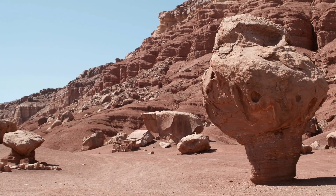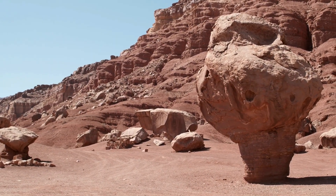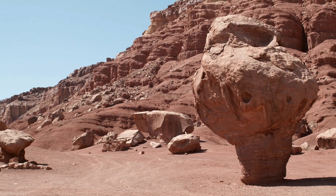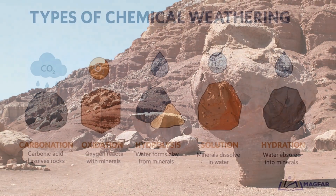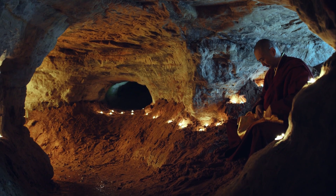By the end of this video, you'll clearly understand the main chemical weathering processes: carbonation, oxidation, hydrolysis, solution, and hydration. And you'll never look at rocks and landscapes the same way again.